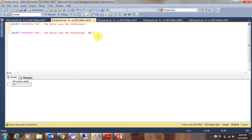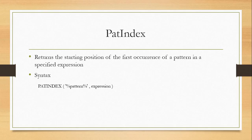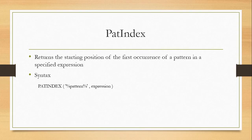Let us now discuss the patindex function. This function returns the starting position of the first occurrence of a pattern in a specified expression. For patindex, you specify two arguments: the pattern you want to search and the expression you want to search the pattern in. You can also use wildcard characters like percent and underscore to search the pattern in the patindex function.